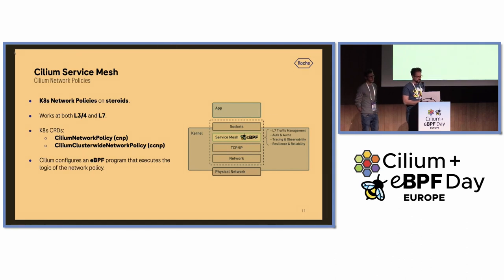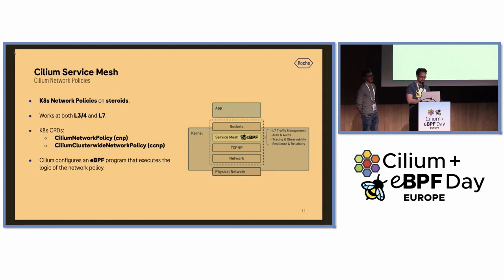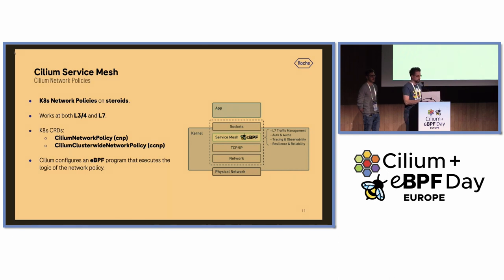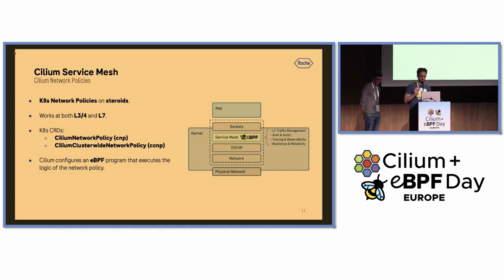Cilium network policies are basically Kubernetes network policies on steroids. They work not only at Layer 3 and Layer 4 but also at Layer 7, meaning you can filter traffic not only by IP and port but also, for example, block an HTTP request that is missing specific HTTP headers. When you create a Cilium network policy, Cilium configures an eBPF program for that particular pod namespace or cluster. When traffic comes from user space, this eBPF program executes the policy logic — forwarding traffic to the Linux networking stack, blocking it, or redirecting it to an Envoy proxy.